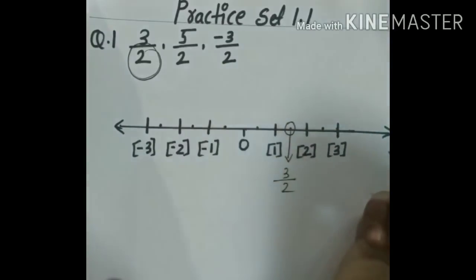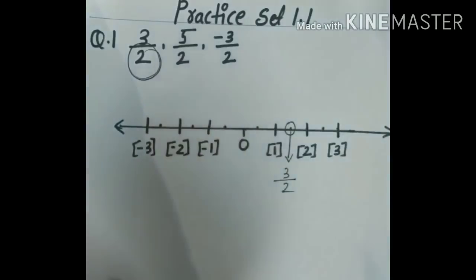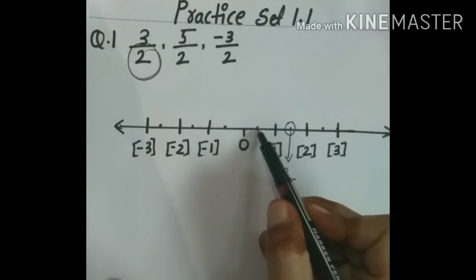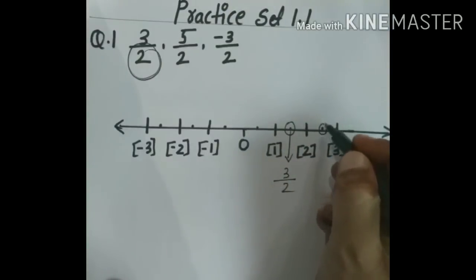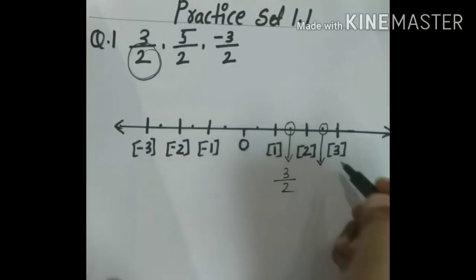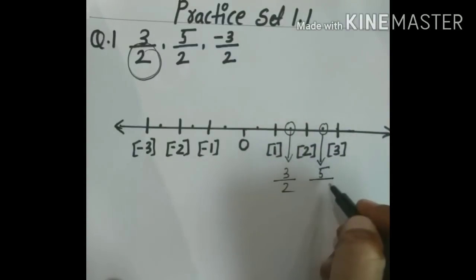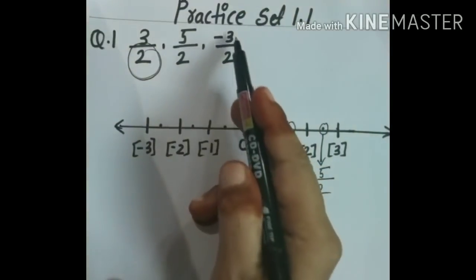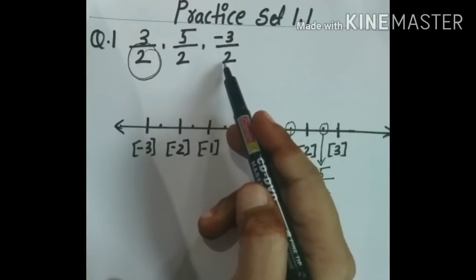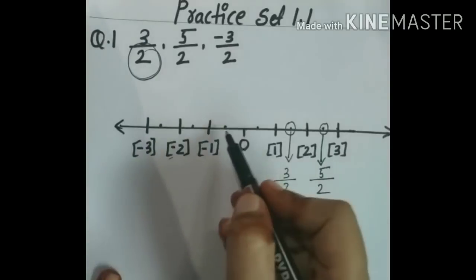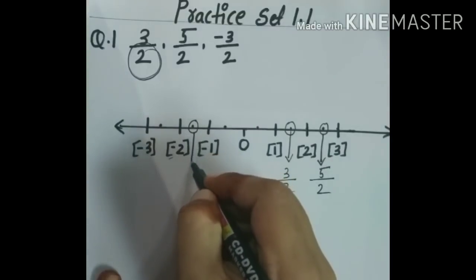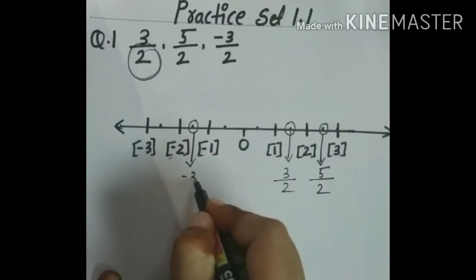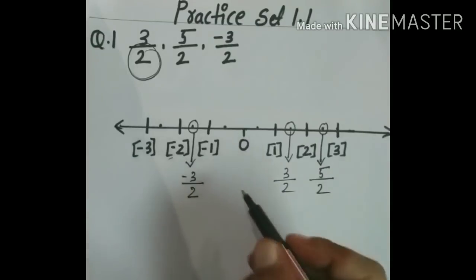Next, 5 upon 2 — start from 0 again and count: 1, 2, 3, 4, 5. Do the circle at that point and write 5 upon 2. And for minus 3 upon 2, the negative numbers will be to the left of 0. Count: 1, 2, 3 to the left. Here is minus 3 upon 2. This way we have to represent the numbers on a number line.